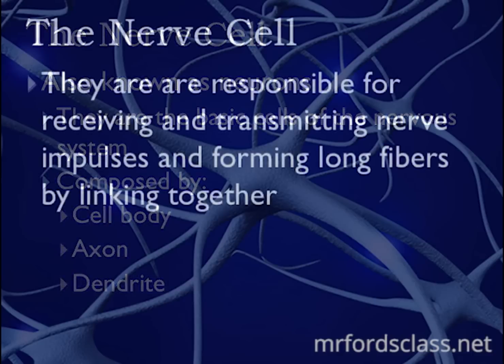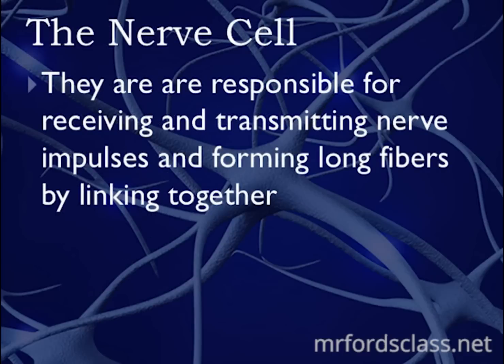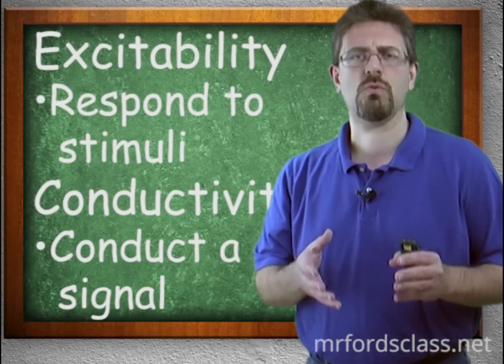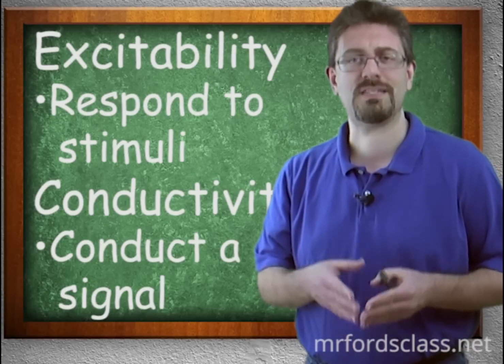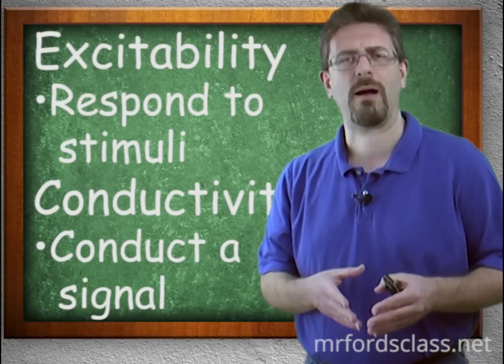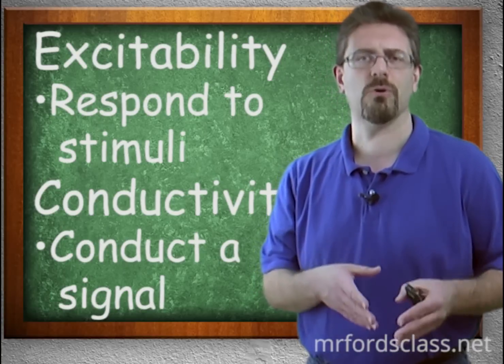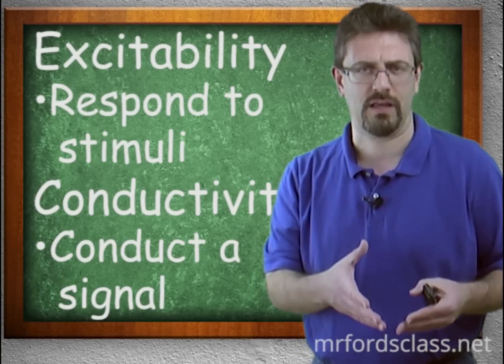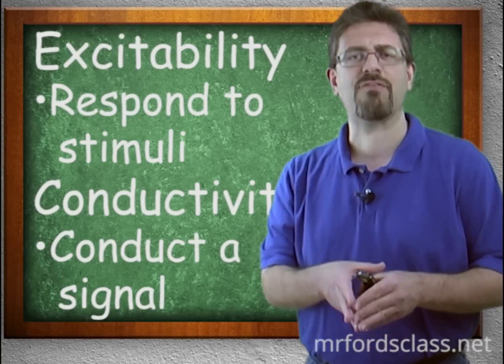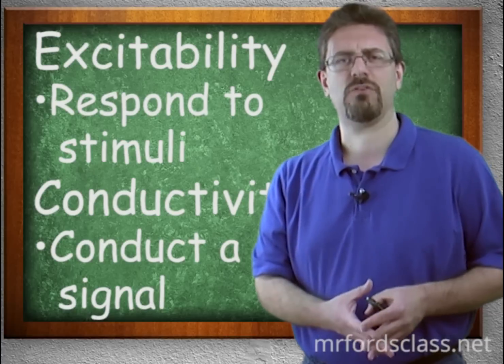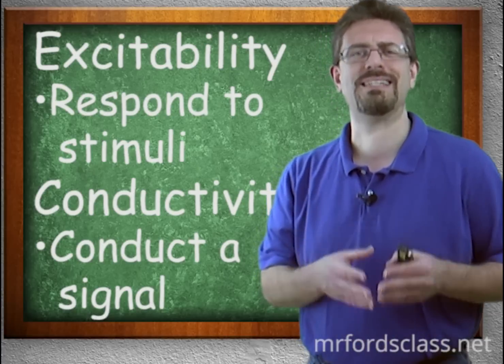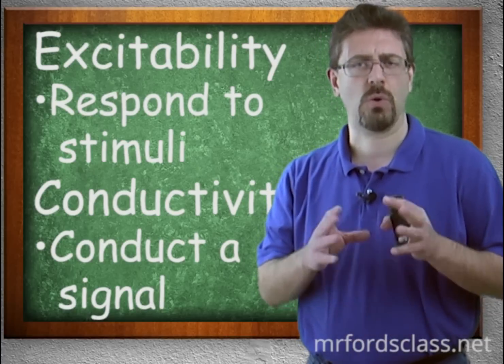Neurons are responsible for receiving and transmitting nerve impulses and forming long fibers by linking together. The two very important physiological properties of a neuron are that they have to be excitable and they have to be able to conduct the signal.